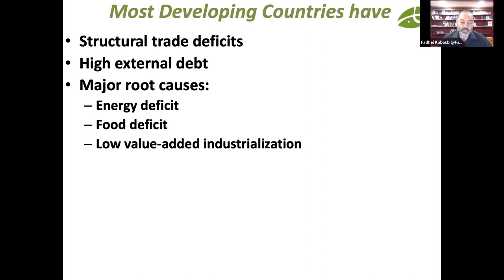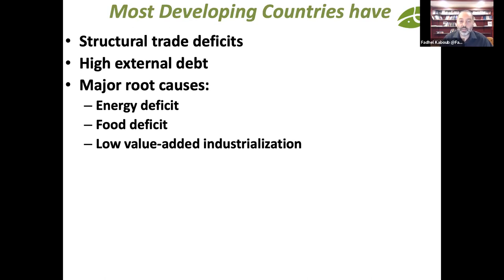When looking at the major root causes of this structural trade deficit, we typically identify three areas. First is energy deficits or energy imports — and this is true even for big oil producers in Africa, because we export crude oil and re-import the more expensive refined petrochemicals like gasoline and kerosene. Second is the food deficit: Africa today, according to UNCTAD, imports 80–85% of its food.